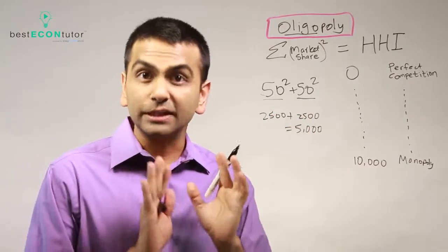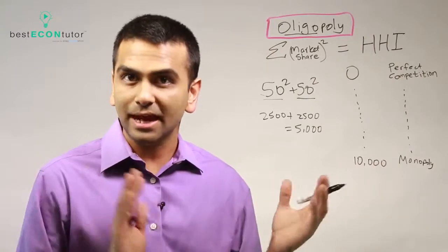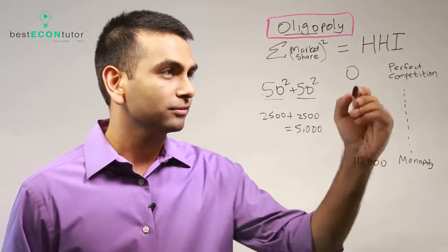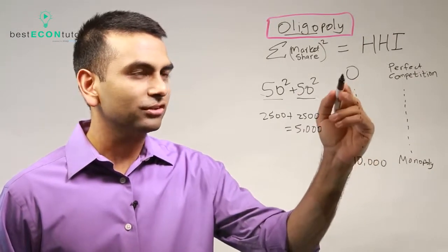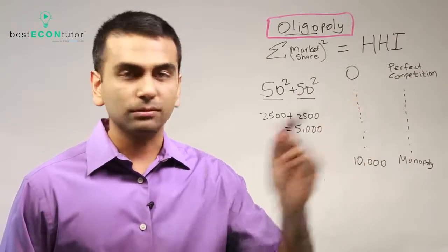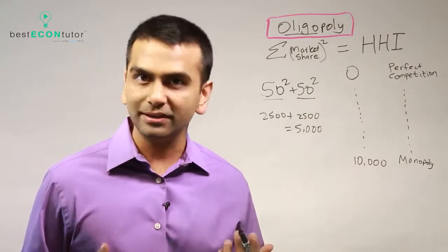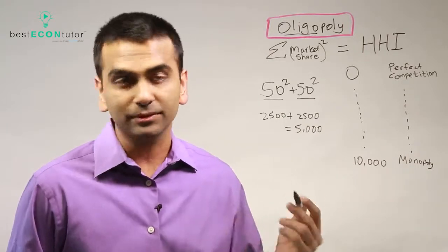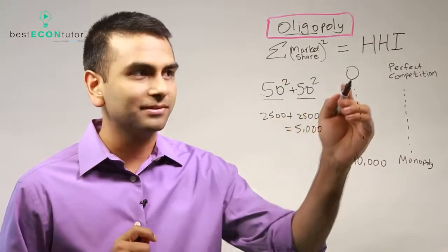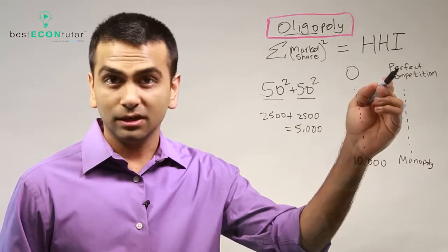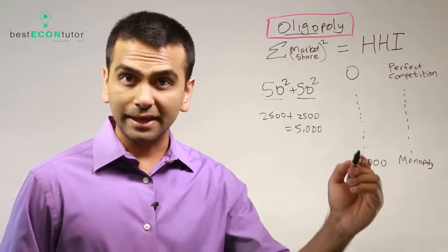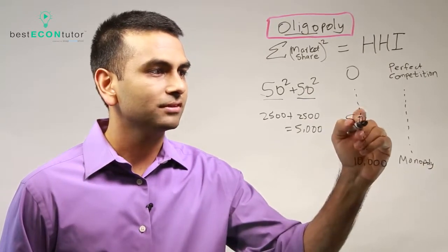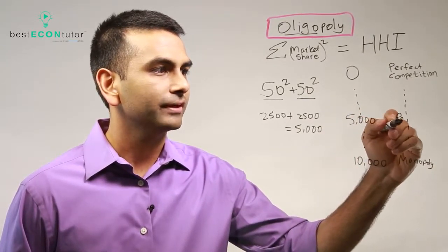So whenever there's exactly two firms and they both have exactly half of the market that's called a perfect duopoly. Duo meaning two. So here if the HHI is zero by the way that's perfect competition because in perfect competition you're a price taker so it's kind of like you have zero percent of the market. Either way zero squared plus zero squared a bunch of times is still zero so there's a lot of competition and the bigger the HHI is the less competition there is so we just found that if the HHI was 5000 that's a perfect duopoly.